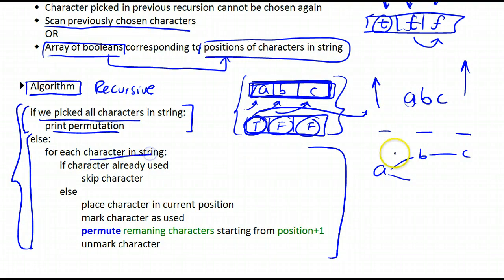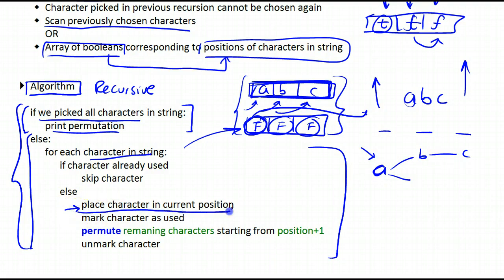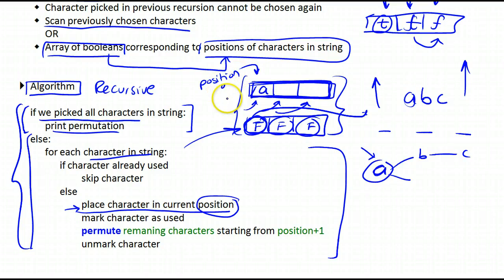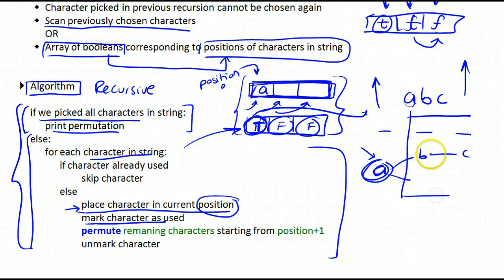We will place that character at the current position — we have an index called 'position' pointing to where we are in the string buffer. At the beginning the string buffer is all empty. We take A — A hasn't been used, it's false — and place it in the string buffer at position zero. Then we mark this character as used, setting it to true. Then we perform a permutation on the remaining characters B and C, starting from position plus one.